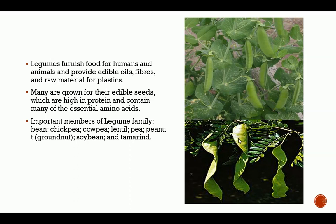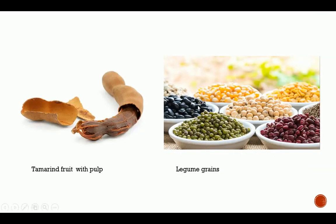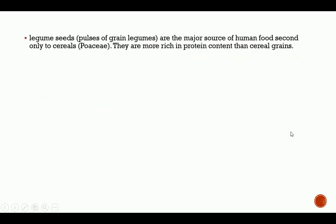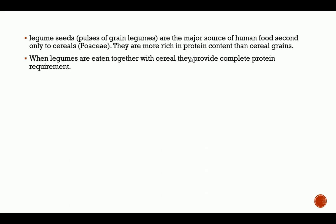The important members of the legume family include the bean, chickpea, cowpea, lentil, pea, peanut, soybean, and tamarind. Here you can see a tamarind fruit with the pulp inside, and here we have legume grains of different types. Legume seeds, which are also called pulses or grain legumes, are the major source of human food second only to cereals. They are more rich in protein content than cereal grains. When legumes are eaten together with cereals, they provide complete protein requirements, since certain protein components not in legumes are found in cereals.